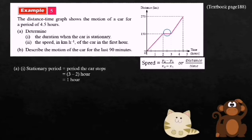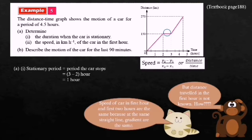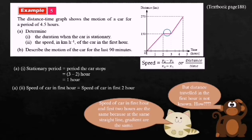Now find the speed in kilometers per hour of the car in the first hour. The distance traveled in the first hour is not directly known, but the speed of the car in the first hour and in the first two hours are the same, because they are on the same straight line and the gradient is the same. So speed of car in first hour equals 150 minus 0 over 2 minus 0, which equals 75 kilometers per hour.